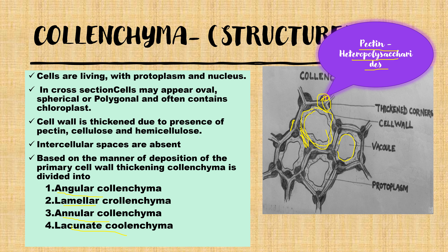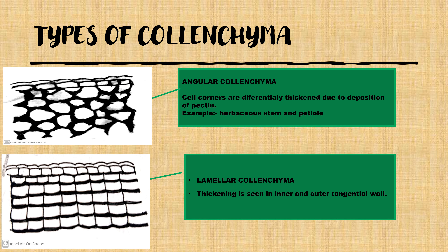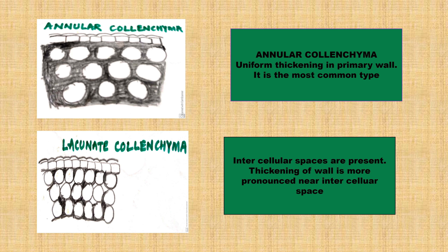Angular colenchyma has pectin deposited only at the corners of the cell, found in herbaceous stems and petioles. Lamellar colenchyma has pectin deposition only on the tangential walls, giving it a lamella-like appearance. Annular colenchyma has uniform pectin deposition on all walls — this is the most common type. Lacunar colenchyma is similar to angular colenchyma, but the pectin deposition is directed towards the intercellular space.